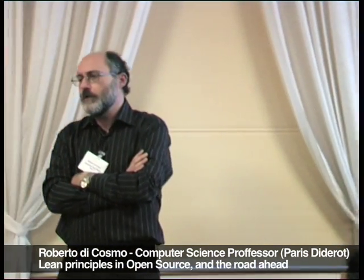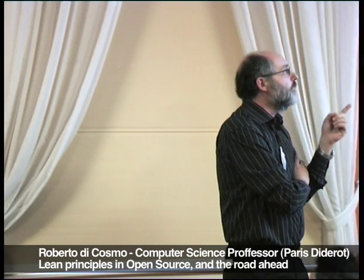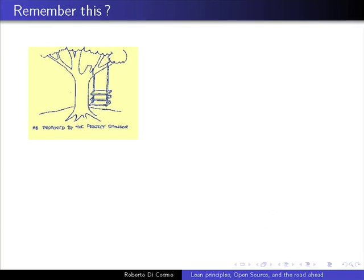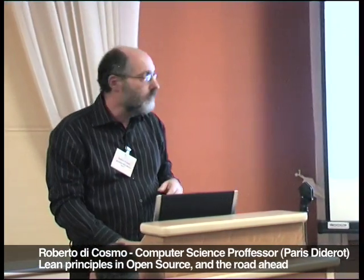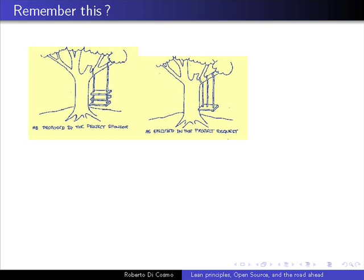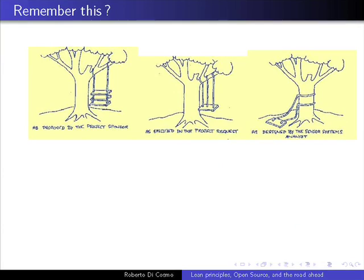Further reminder about software engineering. I'm sure most of the people in this room must have seen this picture, because it is an old picture. I have seen it in my courses in software engineering in the 1980s. Remember, this was describing the software crisis in the 1980s. As proposed by the project sponsor, this is the kind of software artifact you are building. Then in the project request, you don't find precisely the same thing — somebody misunderstood, so here three layers and two strings, and here you have three strings and one layer. Then the senior system analyst did something to fix it, but now it doesn't swing — it doesn't do work.